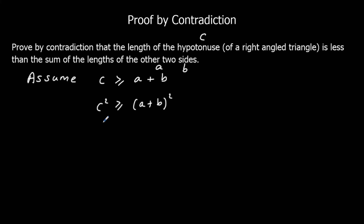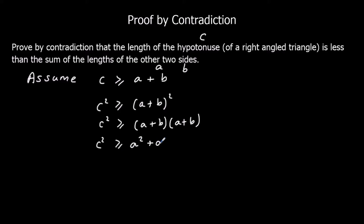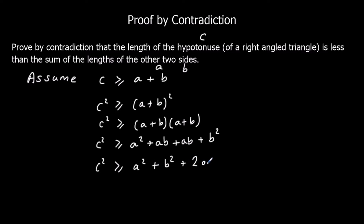We're going to expand this bracket: (A plus B) times (A plus B). A times A is A squared, A times B is AB, B times A is also AB, and B times B is B squared. So we've got C squared is bigger than or equal to A squared plus B squared plus 2AB.